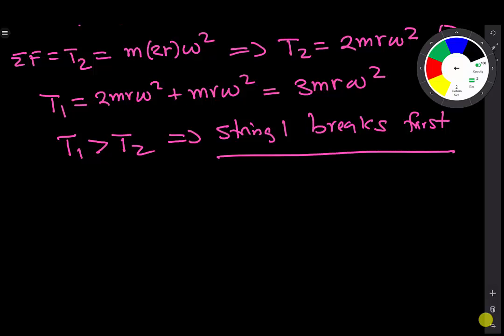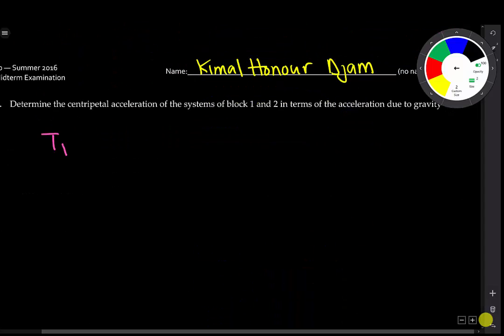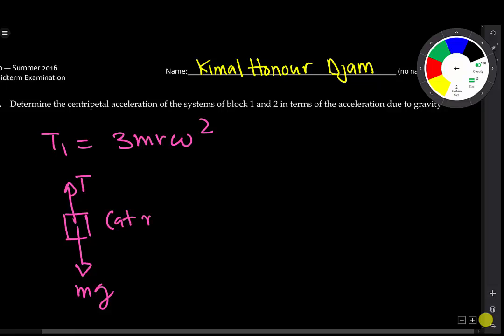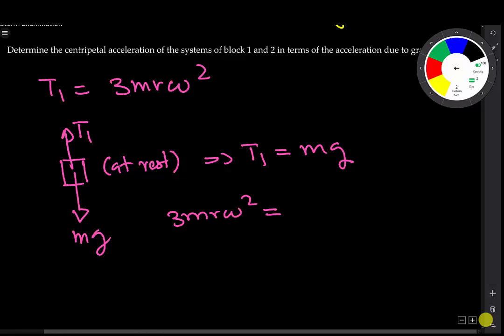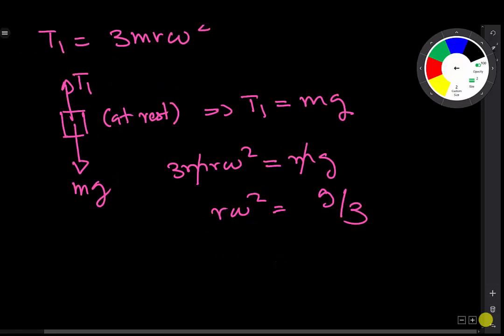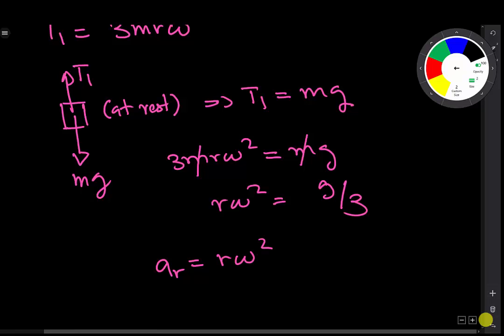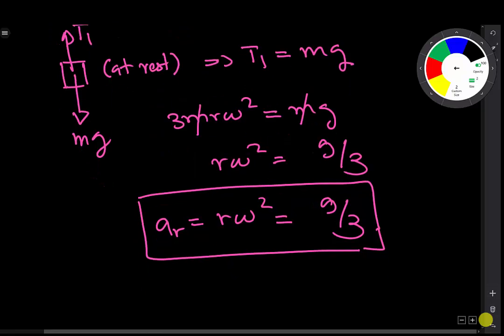Remember that T1 is equal to 3MR omega squared. If you look at the hanging block, this is Mg, this is T1, and this block is virtually at rest, which means that T1 is going to be equal to Mg. Hence, we have 3MR omega squared equal to Mg, the M's cancel, which means that R omega squared is equal to G divided by 3. And A, which is the centripetal acceleration, is equal to R omega squared, which will be equal to G divided by 3. In other words, the centripetal acceleration of the system is the acceleration due to gravity divided by 3.